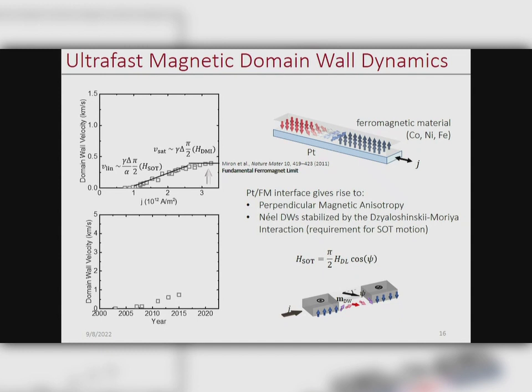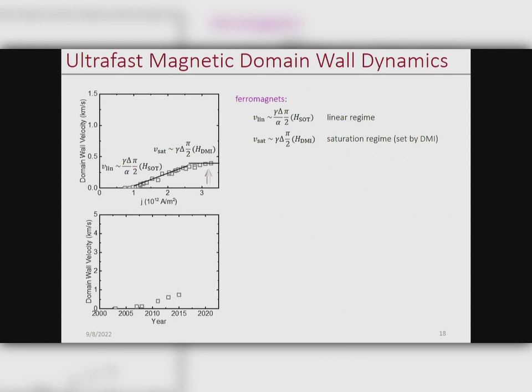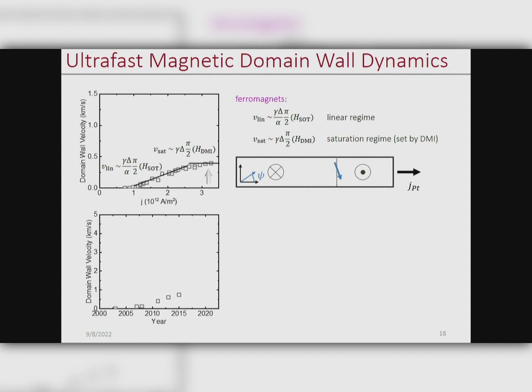This has more or less inhibited the progression of domain wall dynamics for a number of years. What about the DMI is actually limiting domain wall velocity? It has to do with how the torque acts on a domain wall: when you use a spin-orbit torque to drive it into motion, not only does it drive propagation, but it also acts to distort or cant the domain wall toward a Bloch configuration. The harder you drive it, the larger the torque but also the larger the distortion, so these effectively balance out and you get a plateau. The height of this plateau is set by the strength of the DMI.